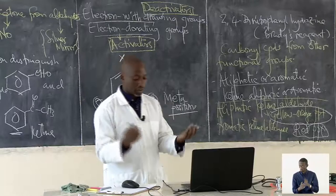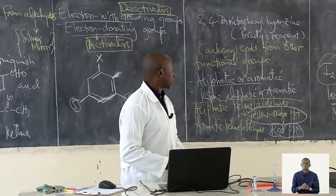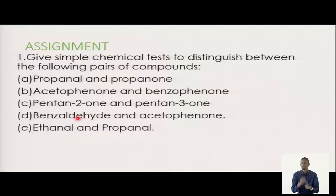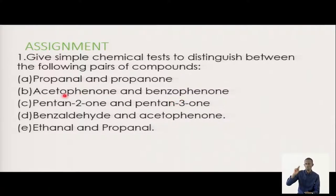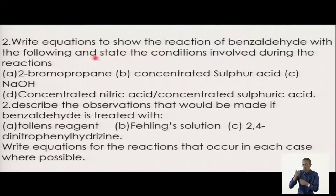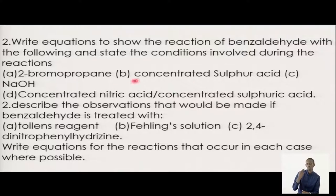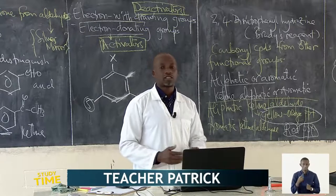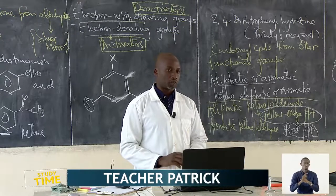Before we wind up this lesson, here is an assignment to try. Number one: give simple chemical tests to distinguish between the following compounds — propanal and propanone (aliphatic); acetophenone and benzophenone (aromatic); pentan-2-one and pentan-3-one (aliphatic); benzaldehyde and acetophenone (aromatic); ethanol and propanone. Number two: write equations to show the reaction of benzaldehyde with bromine in concentrated conditions, and state the conditions involved. I thank you so much for being with me in these 30 minutes, and I hope to be with you again in the next session. Bye bye.